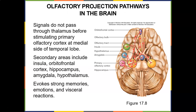The olfactory projections: signals do not pass through the thalamus. The sense of smell developed before the thalamus, stimulating primary areas directly — that's a protective mechanism. That's why smell is so tied to memory and the brain, because it bypasses the thalamus. Secondary areas include the insula, orbitofrontal cortex, hippocampus, and amygdala, which are tied to short and long-term memories, and the hypothalamus. That's why smell evokes strong memories, emotions, and visceral reactions.